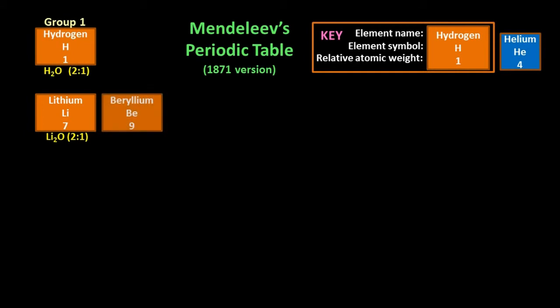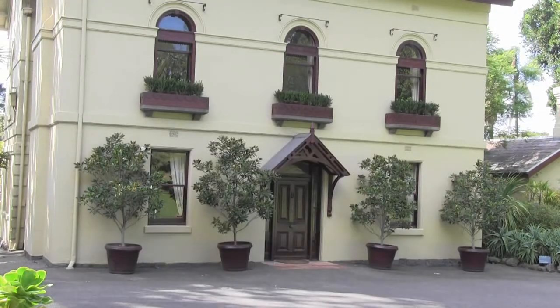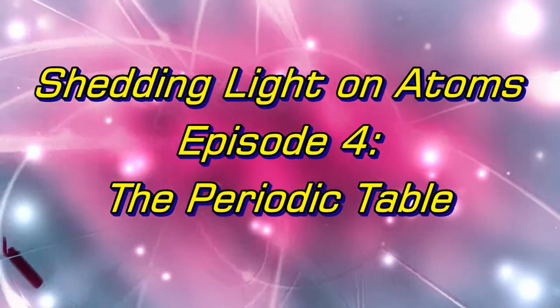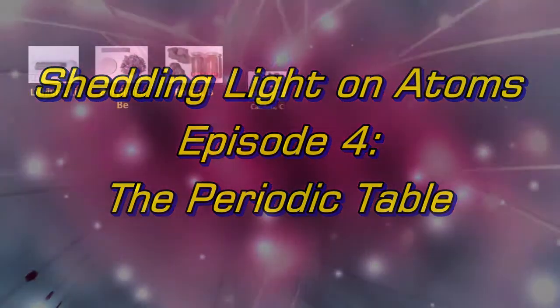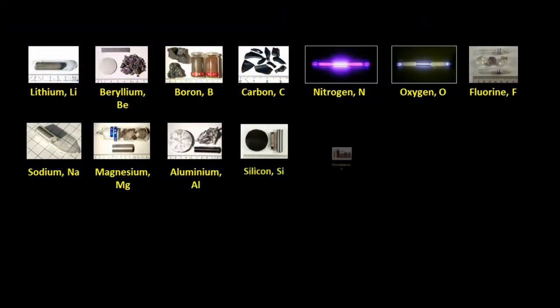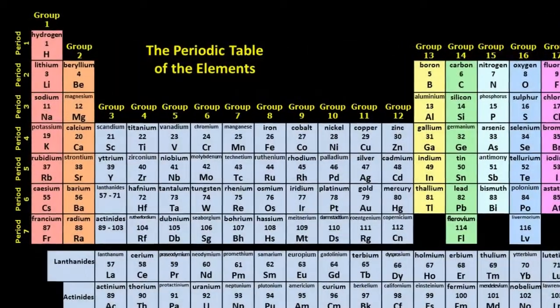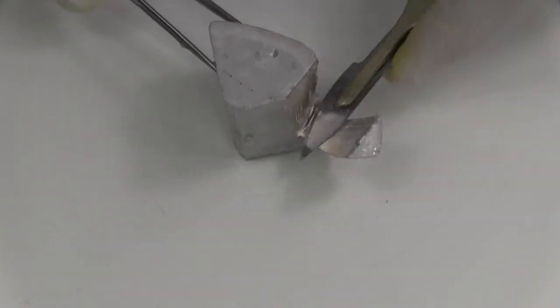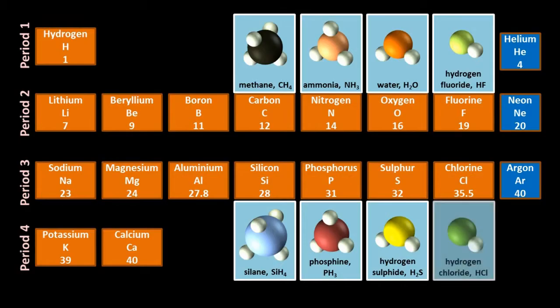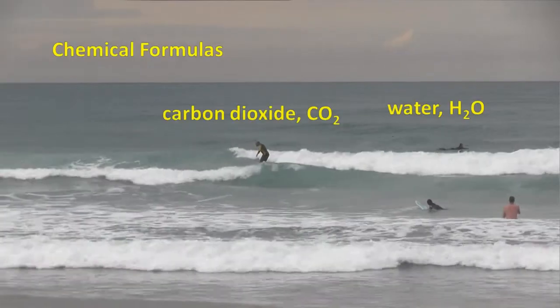He then arranged beryllium, boron and carbon. This has been a short excerpt from Shedding Light on Atoms Episode 4, The Periodic Table. Part of the Shedding Light on Atoms series, which documents the development of our ideas about atoms, while at the same time, teaching students everything they need to know about modern chemistry.